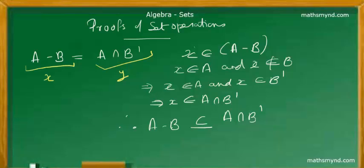First we are dealing with a relatively simple case that set A minus set B is equal to set A intersection set B complement.